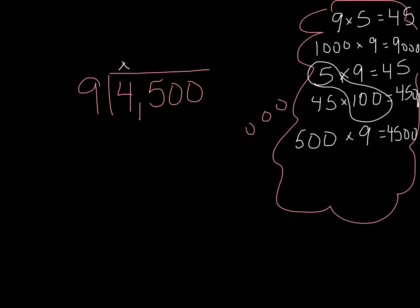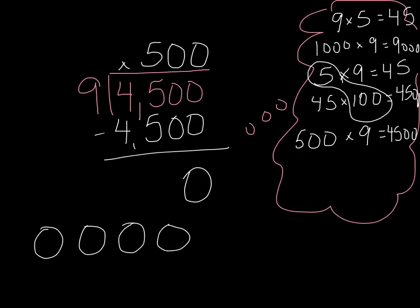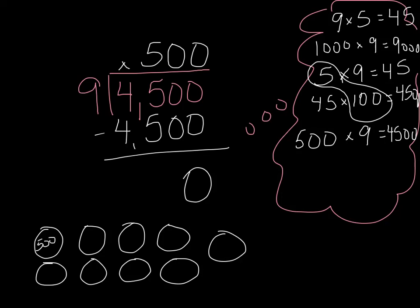Let's see how that plays out on paper. My 500 groups of 9: 9 times 5 is 45, times 100 is 4,500. If I were trying to visualize this, I might draw 9 groups, and then each one would be 500 — same, same, same all the way through. If you've got your math facts, then you've got dividing with zeros.